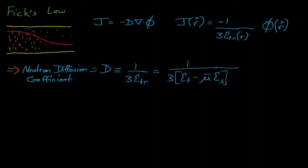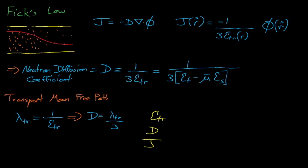We can also define a transport mean-free path, lambda tr, which equals 1 over sigma transport. By doing this, we see that the diffusion coefficient equals the transport mean-free path divided by 3. So what does this all mean? Well, as the neutron cross-sections increase, the diffusion coefficient and the neutron mean-free paths will become smaller. This makes sense. Higher cross-sections mean that neutrons will have trouble diffusing far from where they are created. Also, as mu bar approaches 1, then sigma transport decreases, and the diffusion coefficient and transport mean-free paths increase.